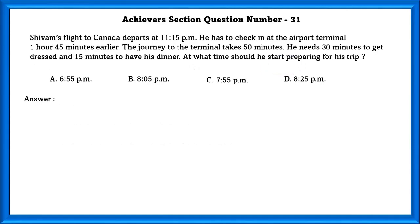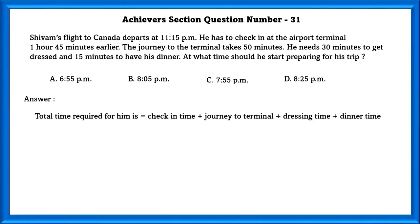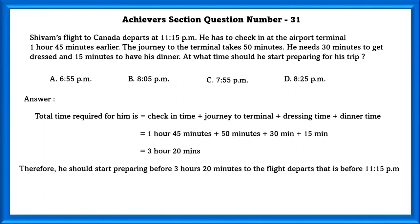Achieve section question number 31. Shivam's flight to Kananara departs at 11:15 pm. He has to check in at the airport terminal 1 hour 45 minutes early. The journey to the terminal takes 50 minutes. He needs 30 minutes to get dressed and 15 minutes to have his dinner. At what time should he start prepping? Total time required is check-in time plus journey to terminal plus rest time plus dinner time, which is equal to 3 hours 20 minutes. Therefore he should start prepping 3 hours 20 minutes before 11:15 pm, which is 7:55 pm.